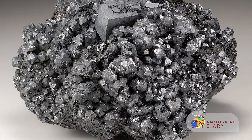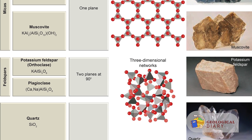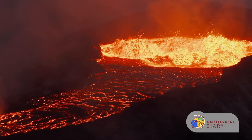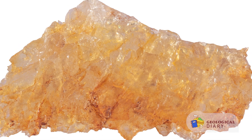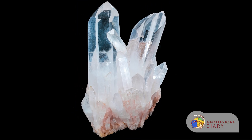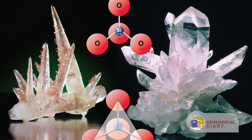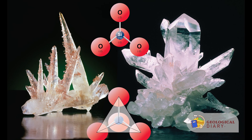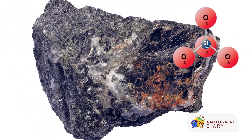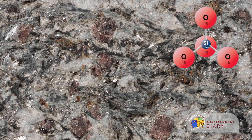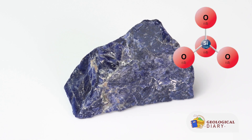Silicate minerals are by far the largest mineral group — even magmas can be described as a molten mix of silicates. Feldspar and quartz are the two most common silicate minerals and are extremely important as rock-forming minerals. The basic building block of all silicate minerals is the silica tetrahedron — a perfectly balanced arrangement of oxygen and silicon that combines to produce the wide variety of silicate minerals. This pyramid-shaped structure is often bound to other elements such as calcium, iron, and magnesium to become the most abundant rock-forming minerals.